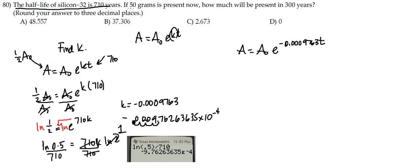And so now the next part of the question says, if there are 50 grams present now, how much will be present in 300 years? So when t is 300 and there's 50 grams present now, that means there's 50 here, we can go find how much will be present at that time in the future.